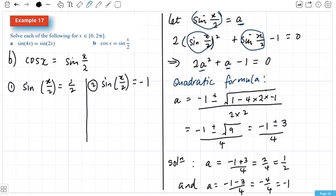Now, for a half, we know from our triangles, sine of a half, that's this angle over here, pi over 6. So we know this is going to be pi over 6. And from our graph as well, because this is positive, it's going to be pi over 6 or over this direction as well, pi over 6 back from pi.